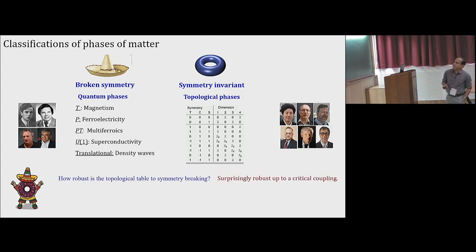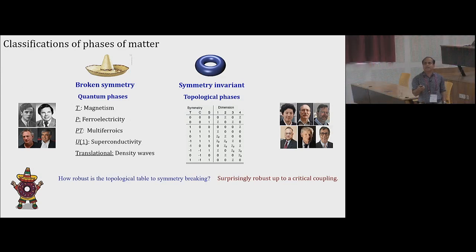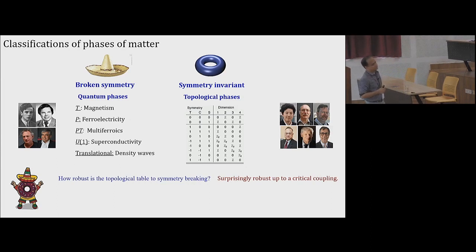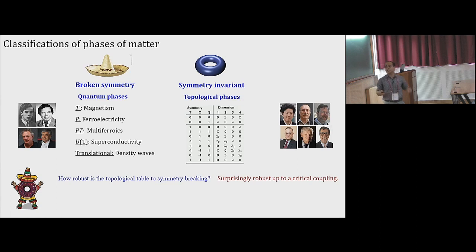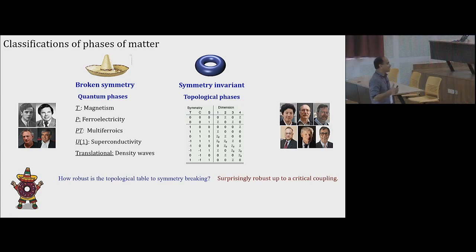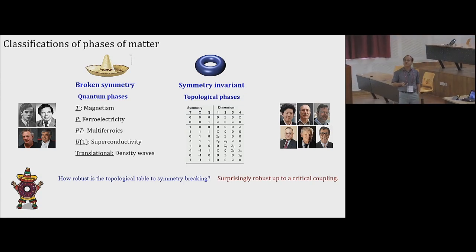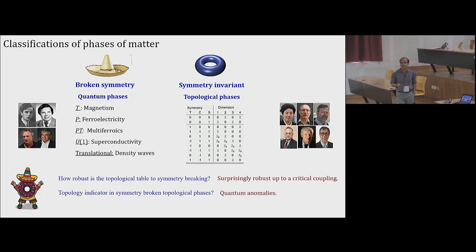How robust is this topological table? We find that even if you lose one of the symmetries, the topological phase does not always change. There are examples in the literature where explicit symmetry breaking by a magnetic field still leaves helical edge states robust up to a critical field value. Here I will talk only about continuous symmetry breaking. The question is also what sort of topological indicator you get in such a case, and we discuss some quantum anomalies.